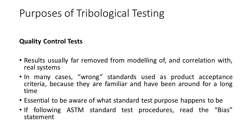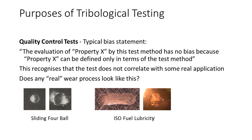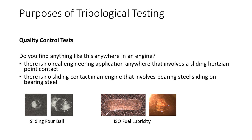If you choose to follow an ASTM standard procedure, you should note the bias statements that frequently state something like: the evaluation of property X by this test method has no bias because property X can be defined only in terms of the test method. This essentially recognises that the test does not correlate with some unspecified real application. Does any real wear process look like this? Do you find anything like this anywhere in an engine? The answer to both questions is of course no.